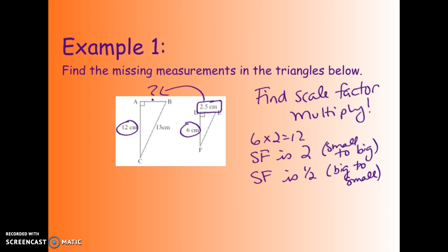So 2.5 times 2 equals 5, which means that AB has a length of 5 centimeters. So you might write it something like AB equals 5 centimeters.